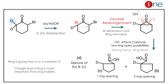Two key learnings: First, Favorskii rearrangement — if you have an alpha-haloketone, think of Favorskii rearrangement. Second, the ring contracts from a 6-membered system to a 5-membered system because charge relief is the driving factor — the relief of charge is more powerful than ring size and ring stability.